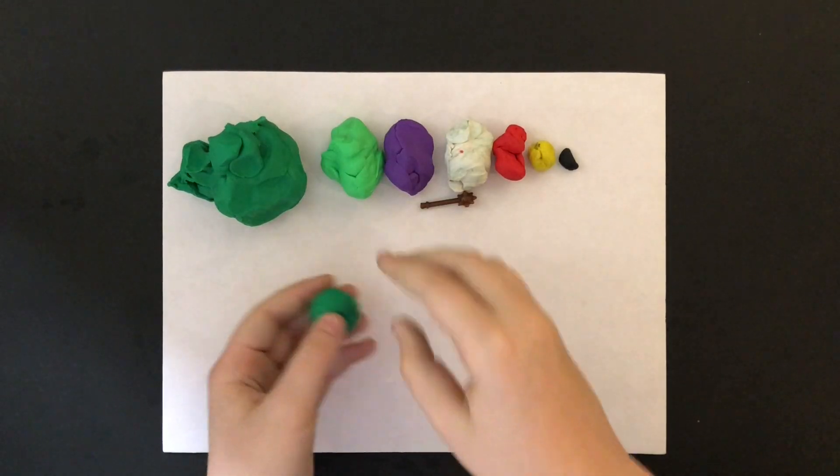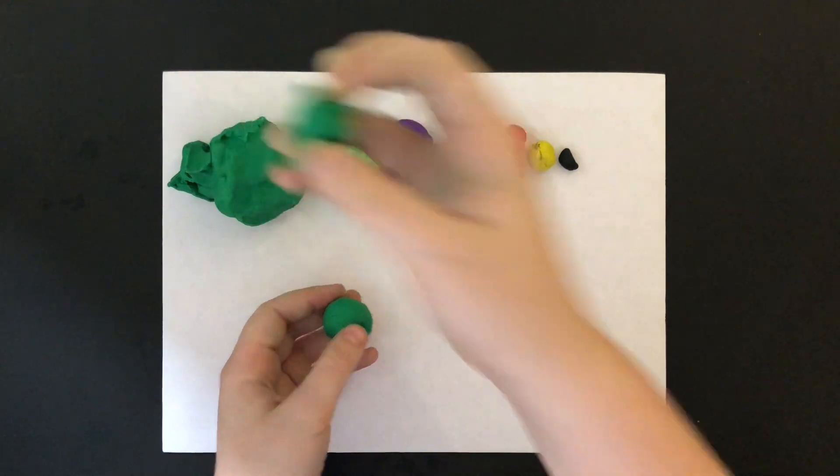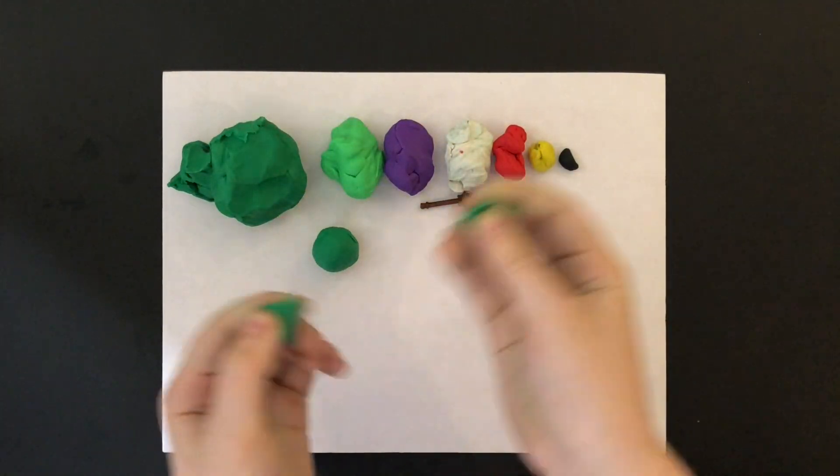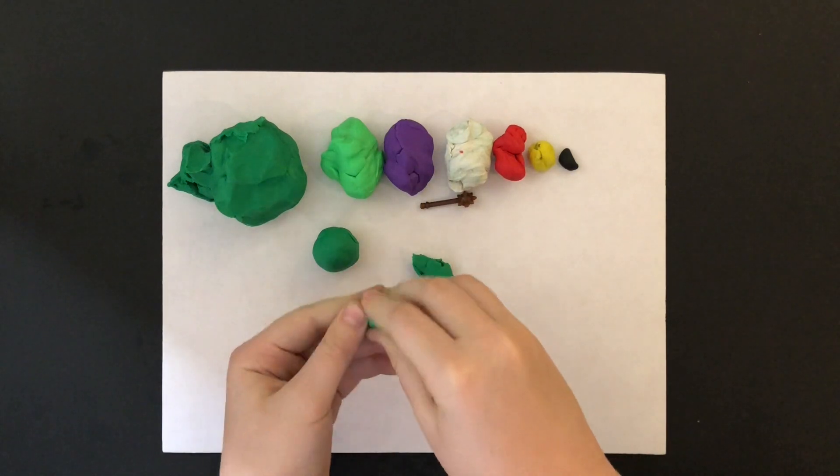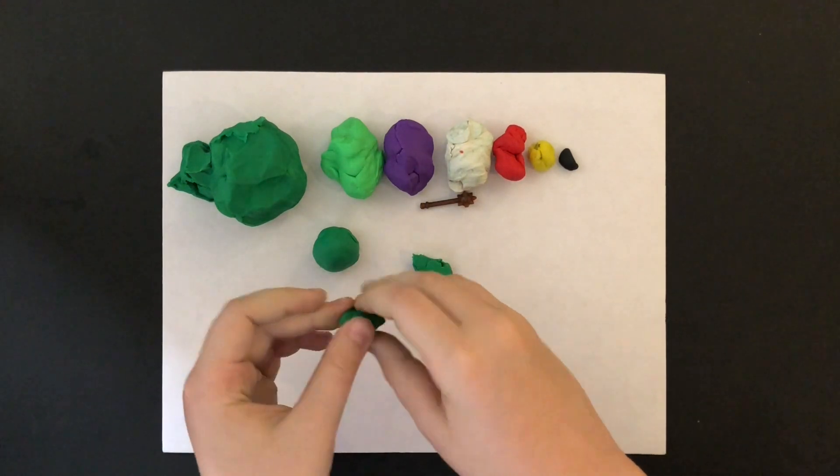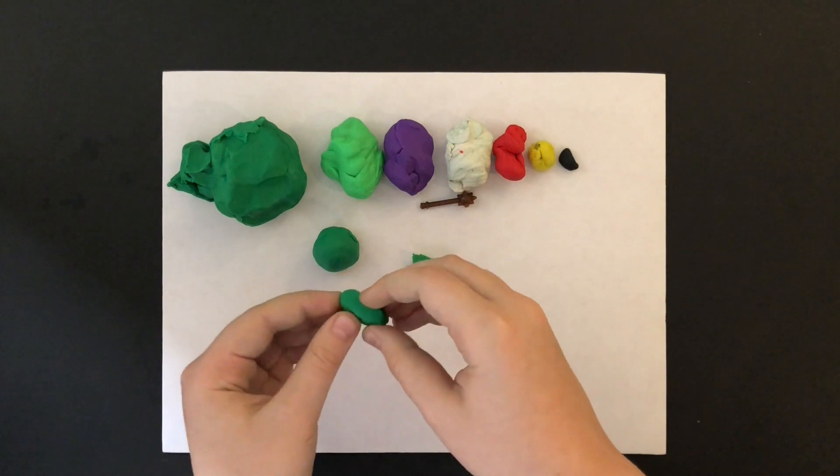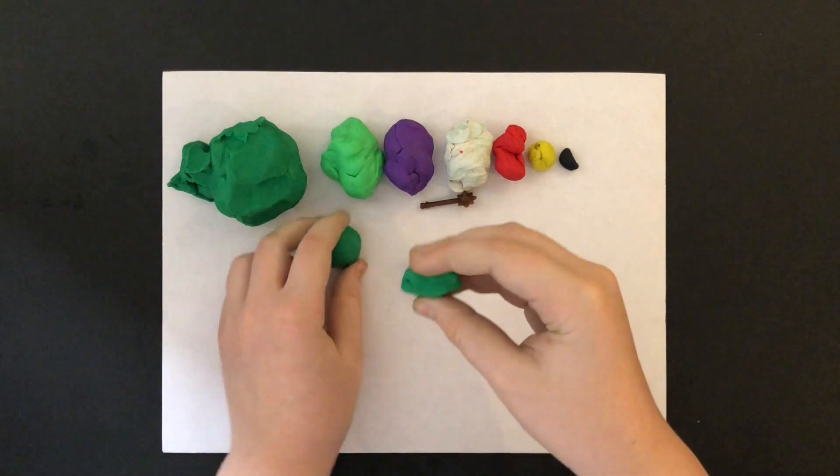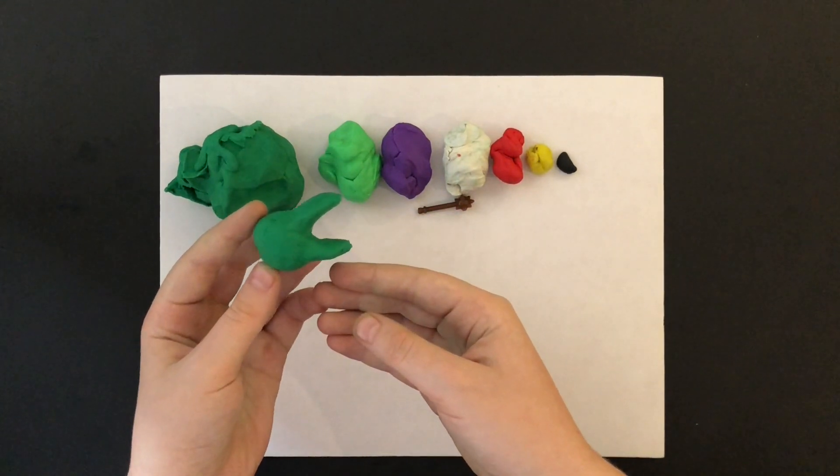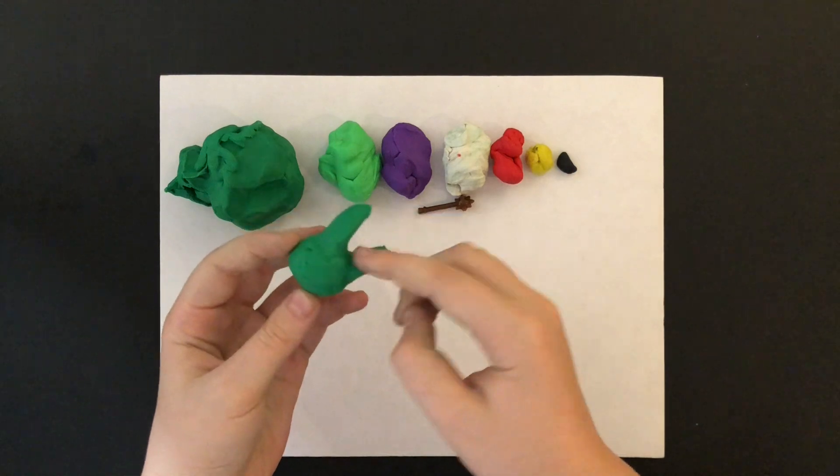Then I pick a smaller piece of green to make the mouth. I divide it into two pieces. They're going to be the top and bottom part of the mouth. I flatten the pieces slightly, and then I attach them to the head.